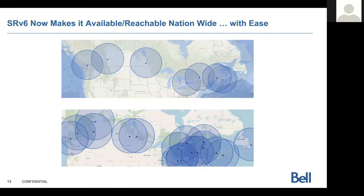When combined with the underlying capabilities of IPv6 and SRv6, I can make all those physical, virtual, or containerized functions attached to the programmable pipeline available nationwide with ease — without complex orchestration overlays — and leverage the inherent capabilities of IPv6 to scale, distribute, and make them reachable. Meaning I now have a more resilient and easier-to-compose network to support the growing needs coming in future years.